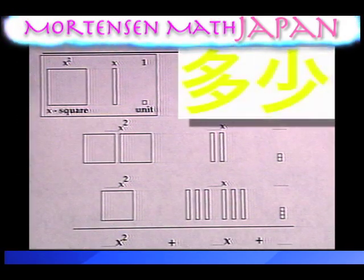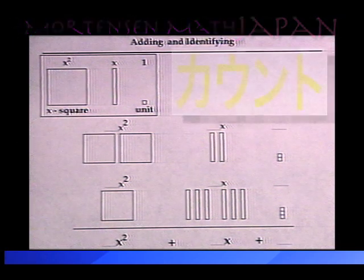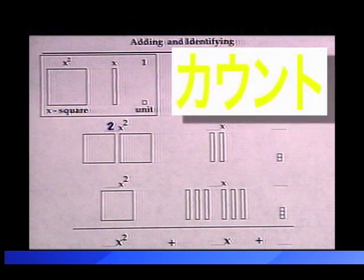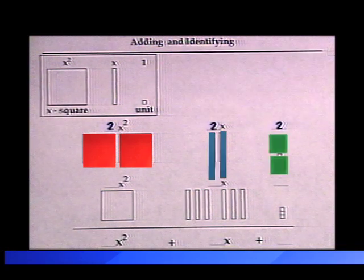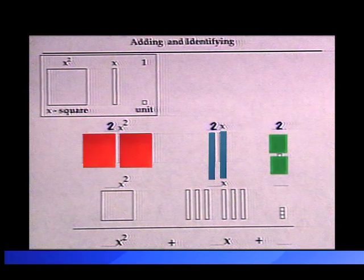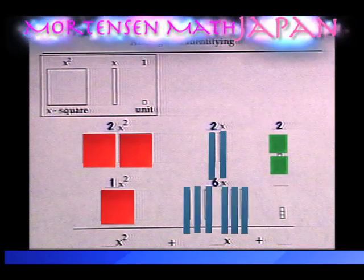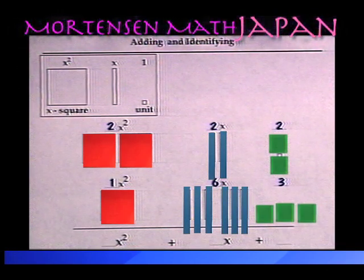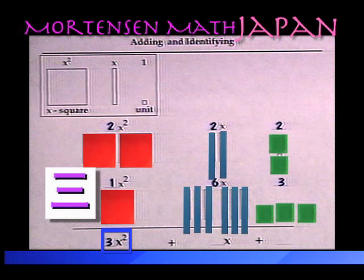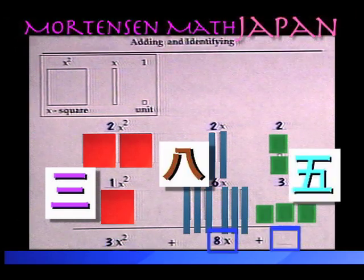Now on to page 20. Let's tell how many of each kind, then count them, then write the answer. The top row is 2 x-square, 2 x, and 2 units. The bottom row is 1 x-square, 6 x, and 3 units. Counting the same kinds added together, there are 3 x-square, plus 8 x, plus 5 units.